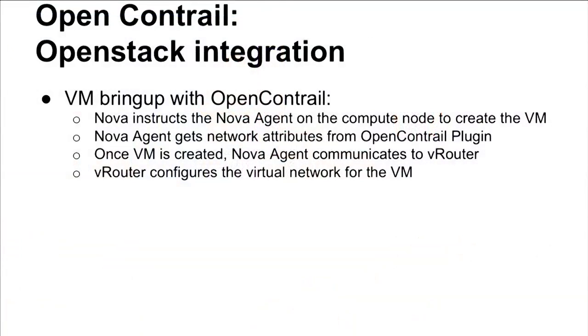How does Open Contrail integrate with OpenStack Neutron? When booting a VM, Nova instructs the Nova agent to create the VM on the compute host. Network attributes are then acquired by the Open Contrail plugin; after the VM is booted, that information is passed down to the vRouter, and the vRouter actually configures the networking for the VM.